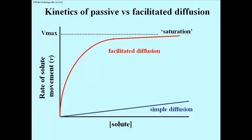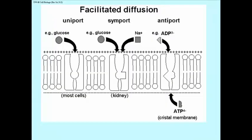So you can recognize facilitated diffusion as a saturable phenomenon where simple diffusion is not saturable. There are three modes of facilitated diffusion shown here. Uniport, the example here is of glucose passing through a glucose transporter into or out of cells.